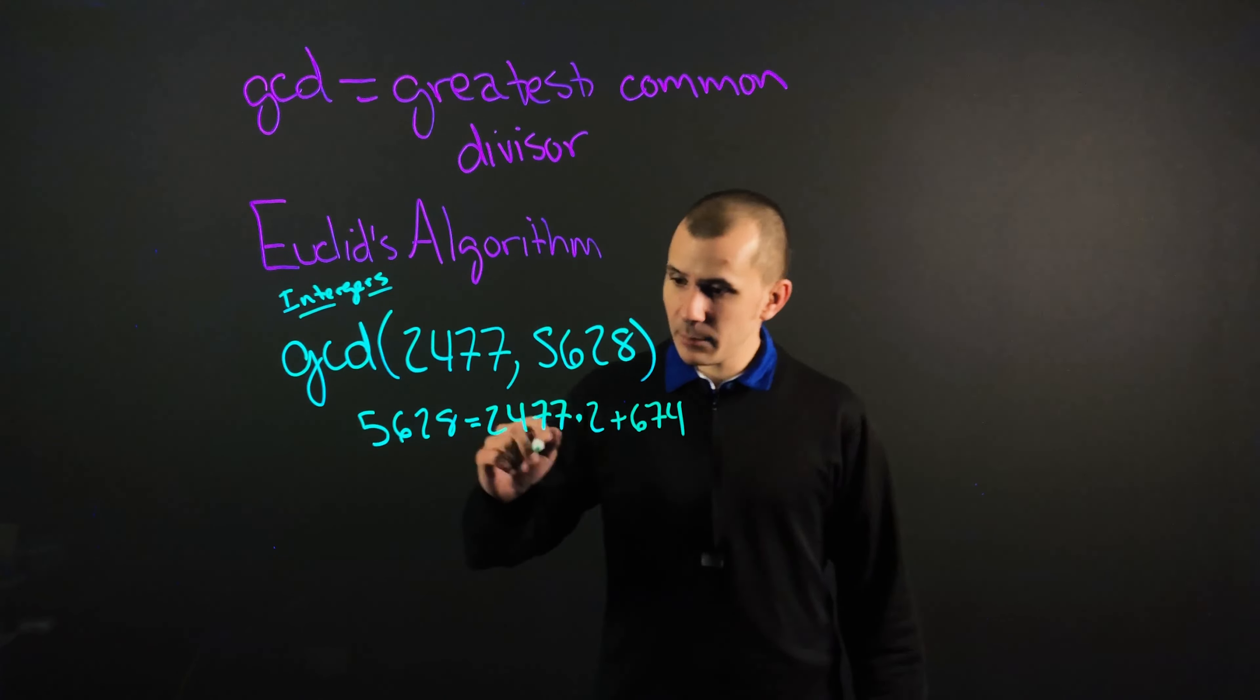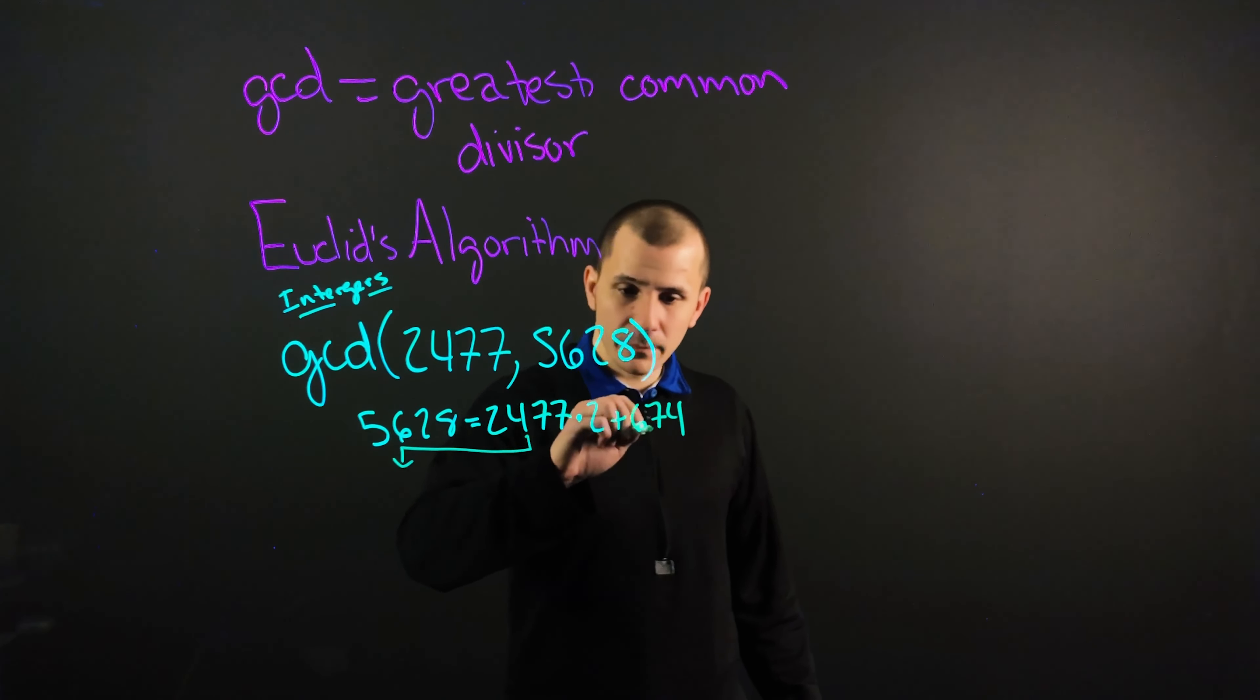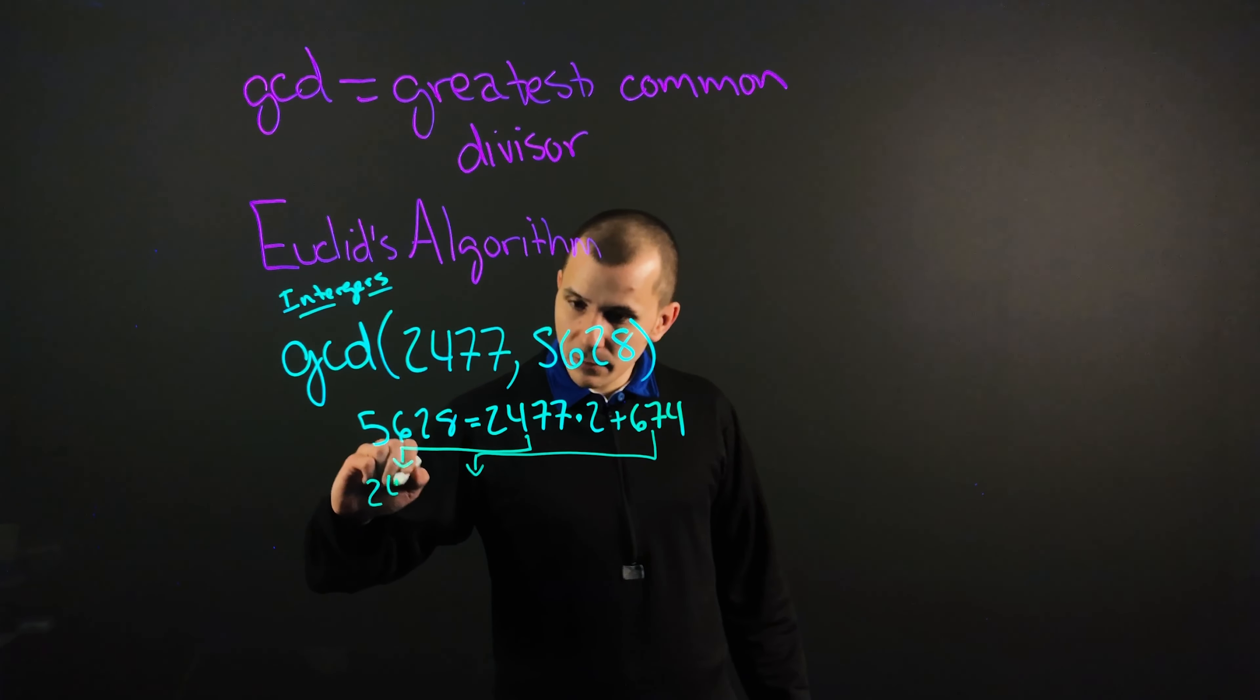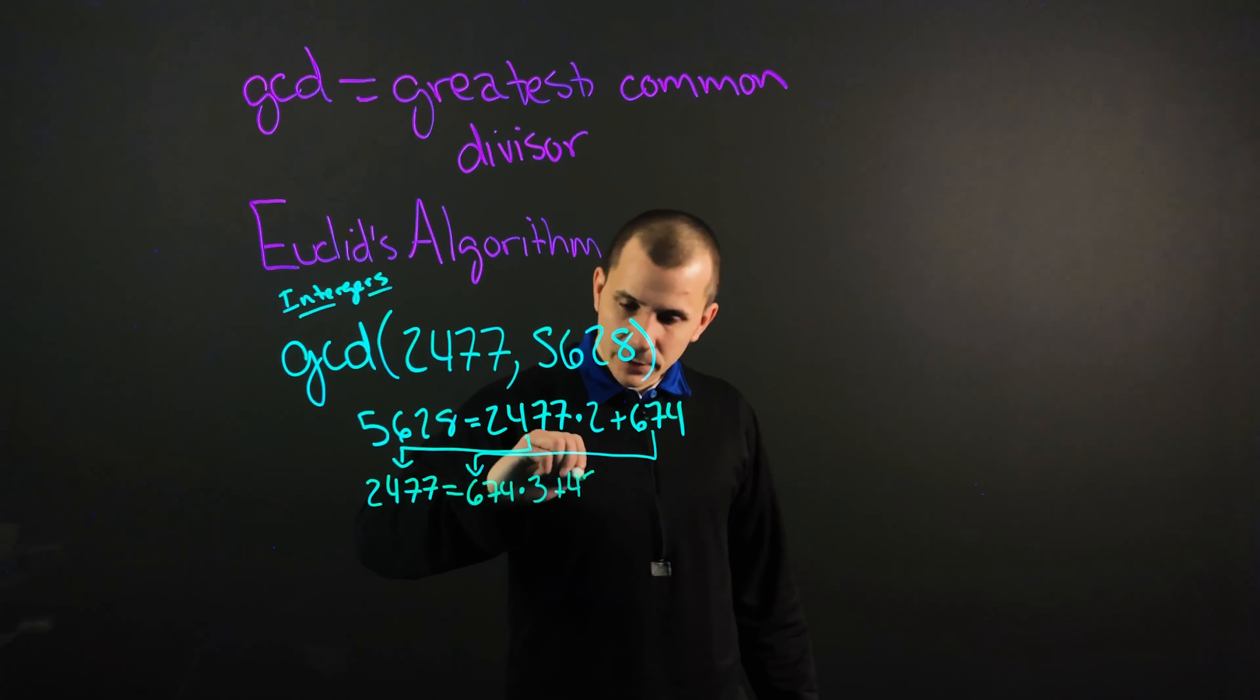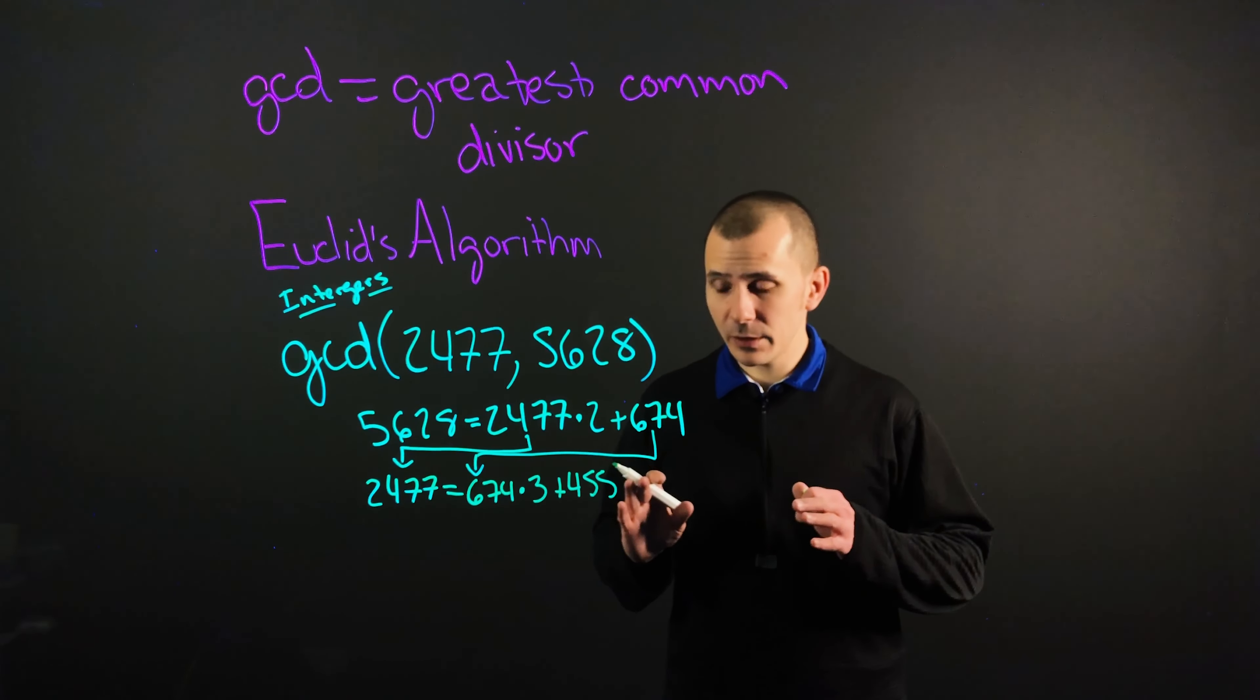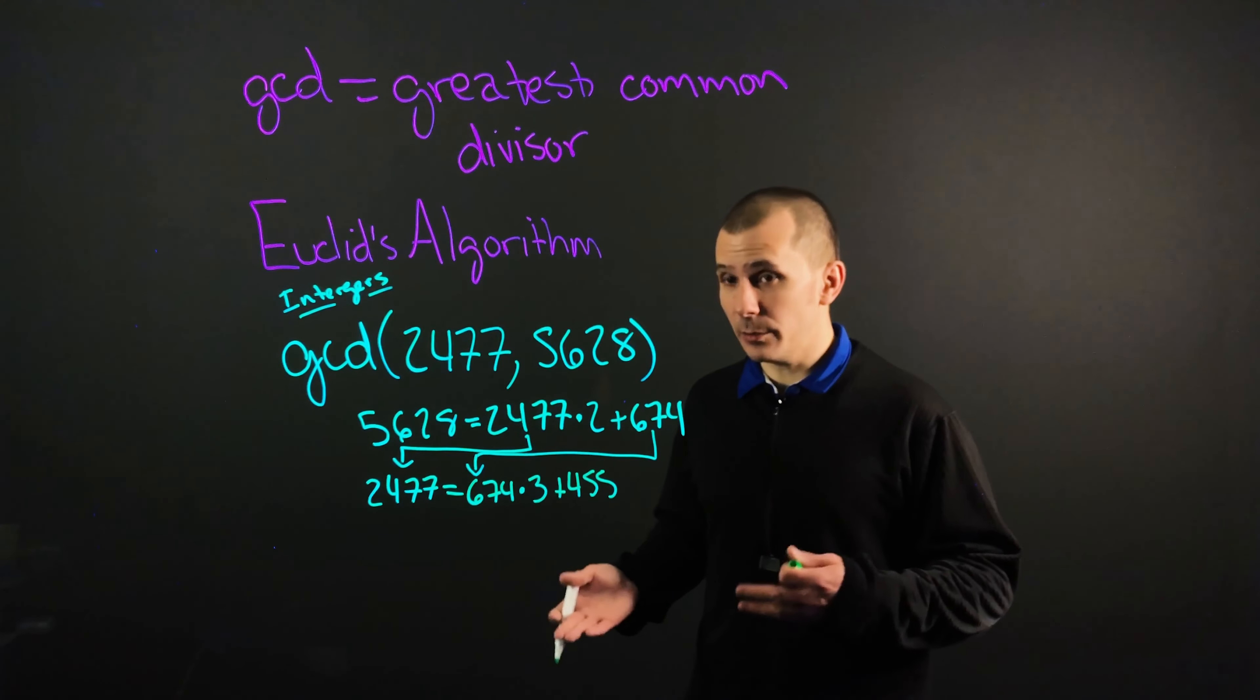And for the next step, we are going to bump over our 2477 to be over here and our 674 to be over here. So we will have 2477 equals 674 times by 3 plus 455. And what we want to do is get this down to zero, and the answer before it is going to be our greatest common divisor.